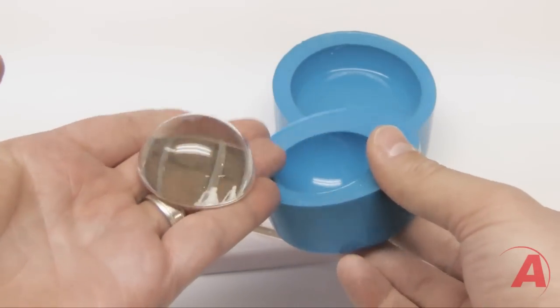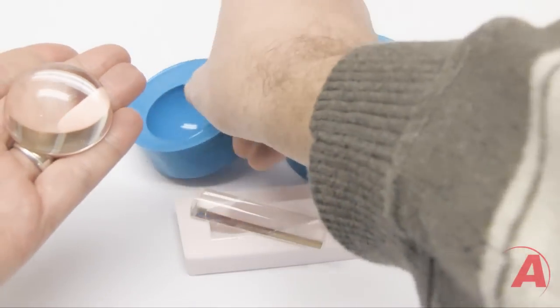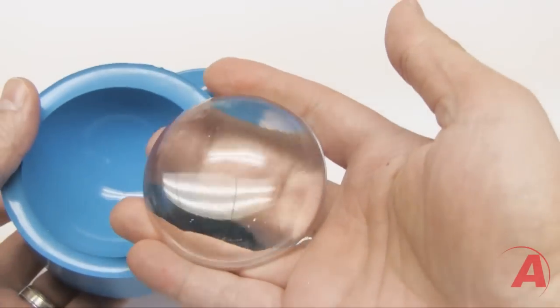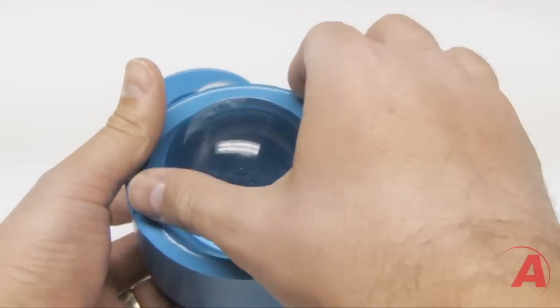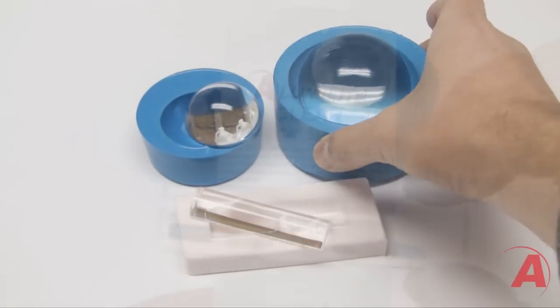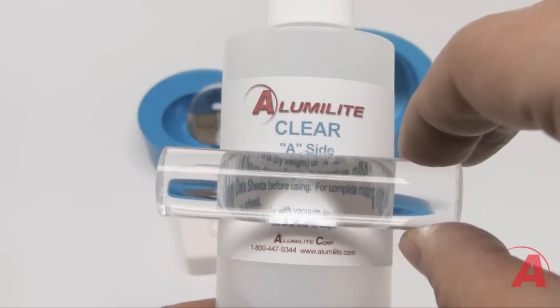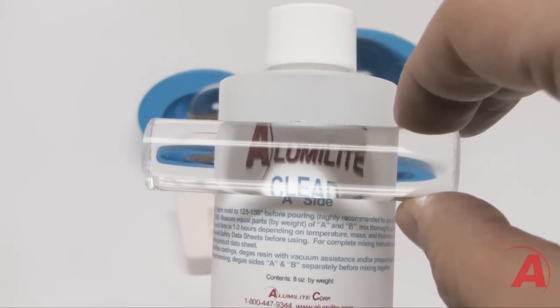While both the Alumalite Clear and Water Clear are really similar in their properties, there are some differences to note.